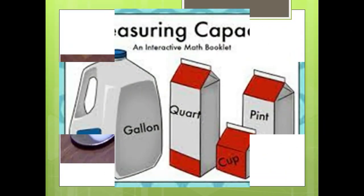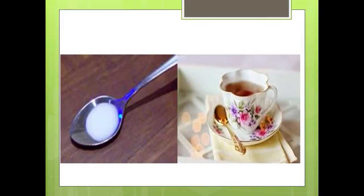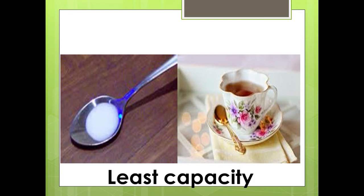See here children, it is a spoon. A spoon can contain only a small amount of milk. In the same way, it is a cup. This can also contain a small amount. So, the object which contains a small amount is called the least capacity object.